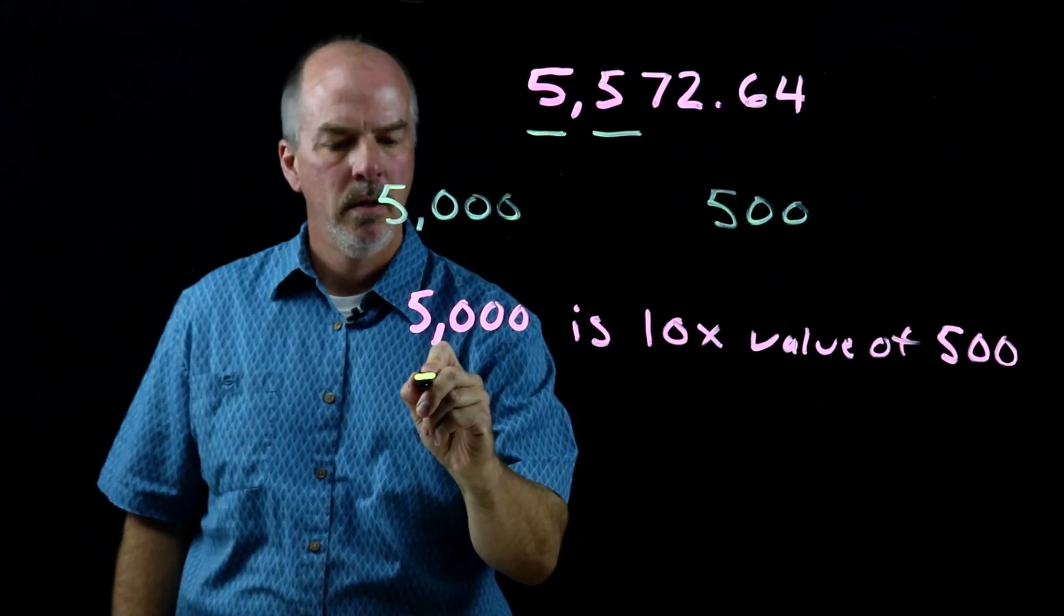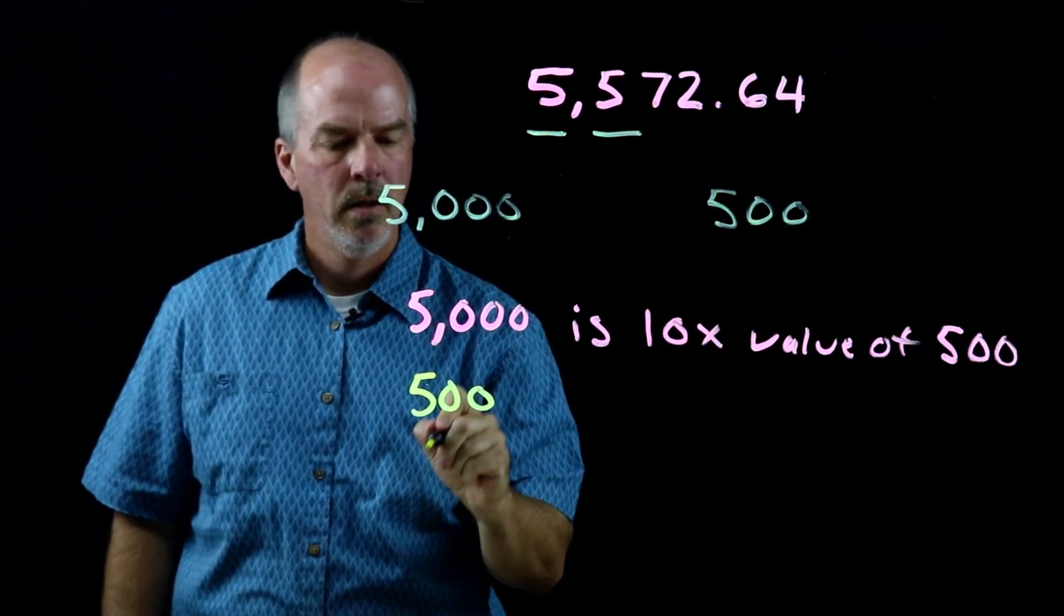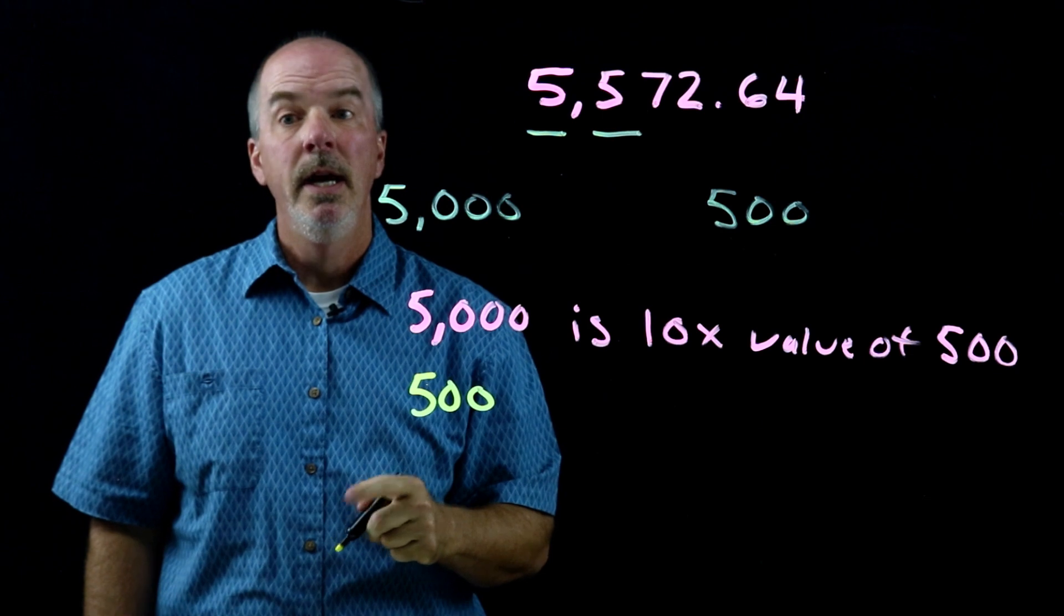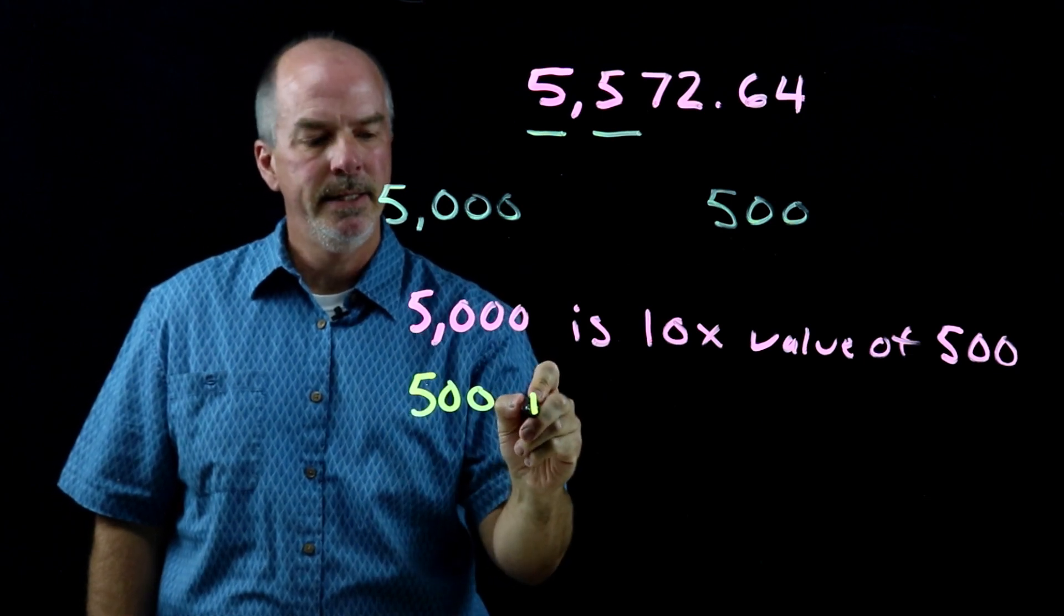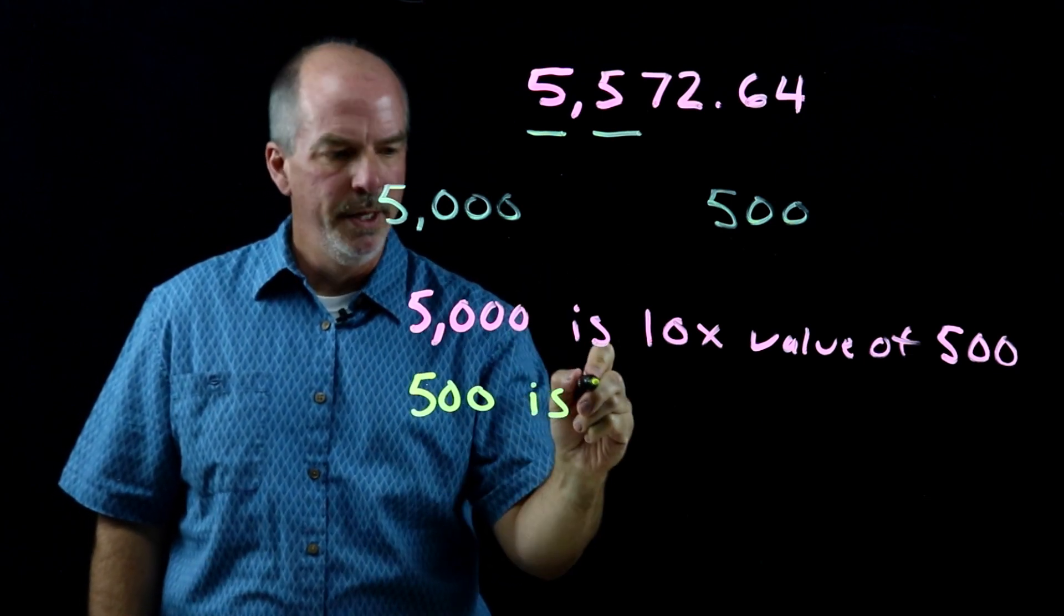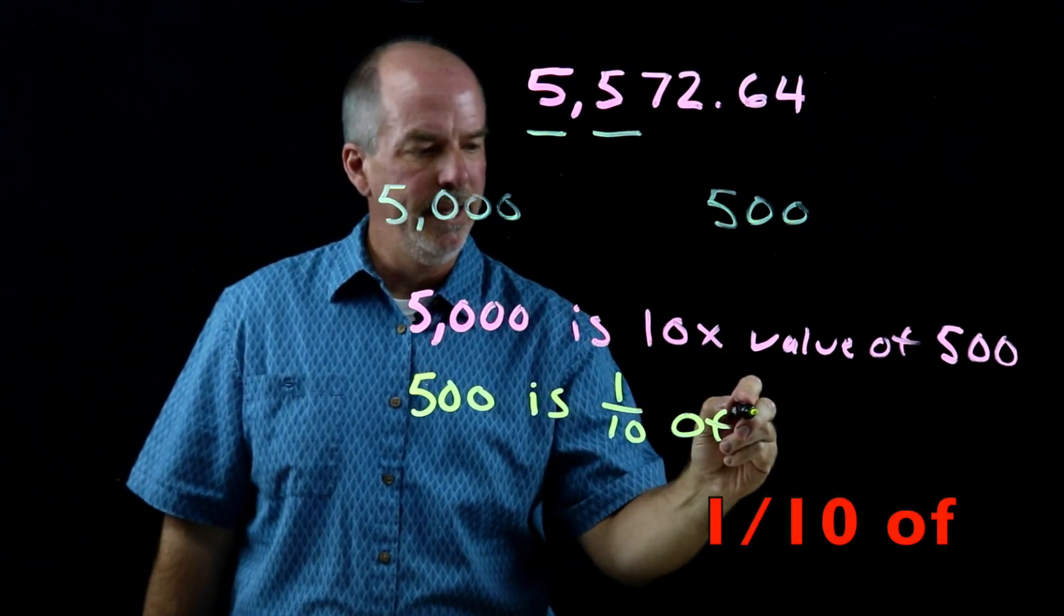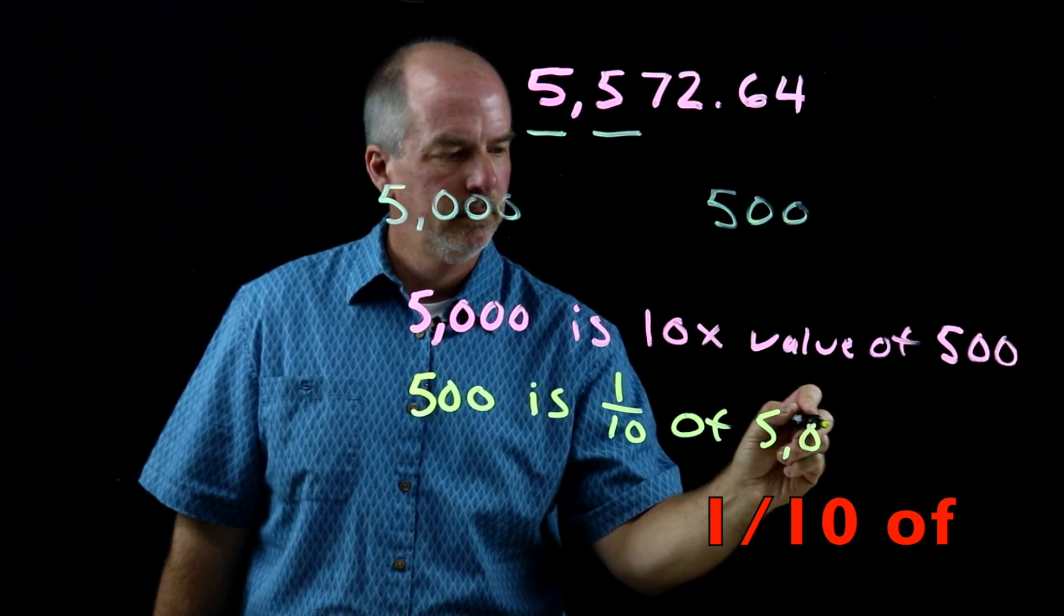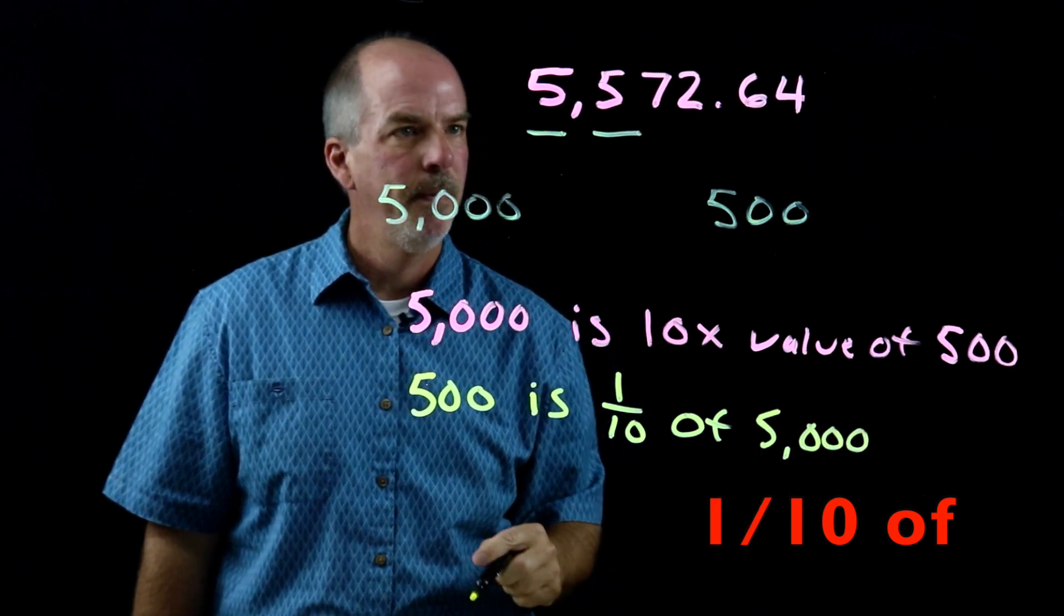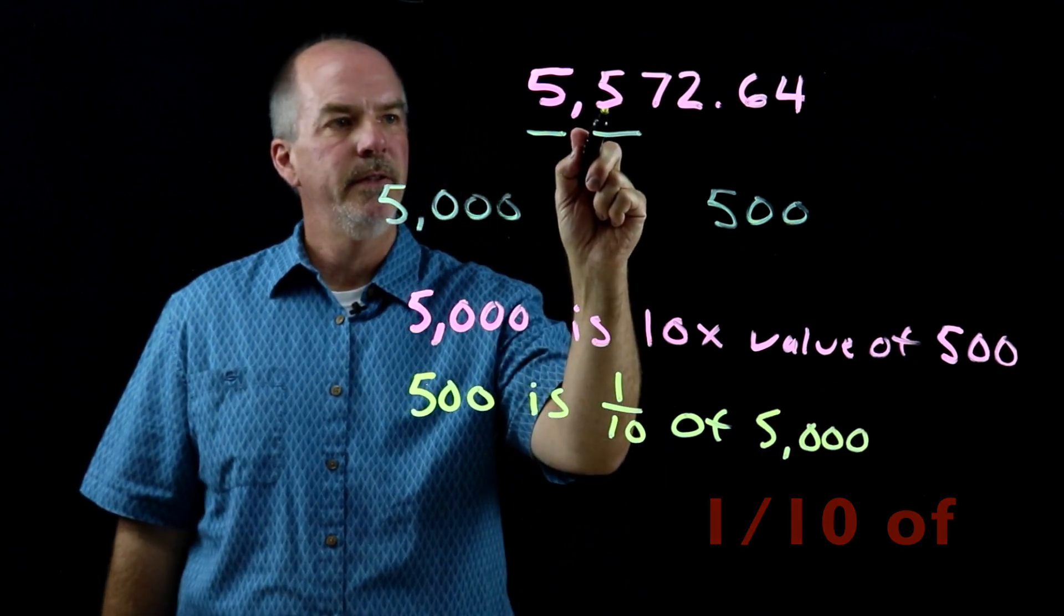Let's go the other way. Five-hundred. I know that five-hundred is one-tenth of five-thousand.